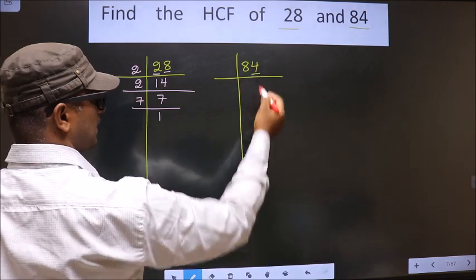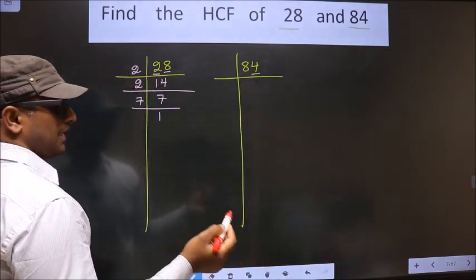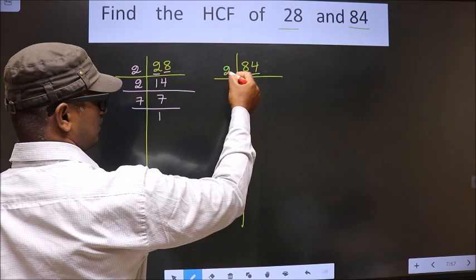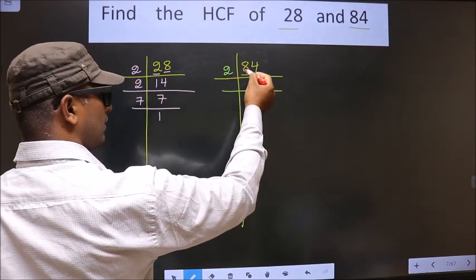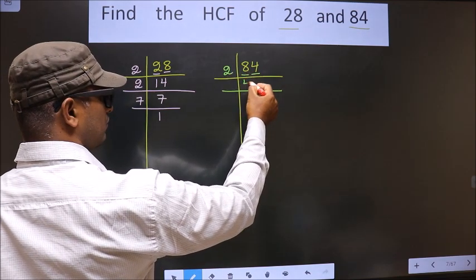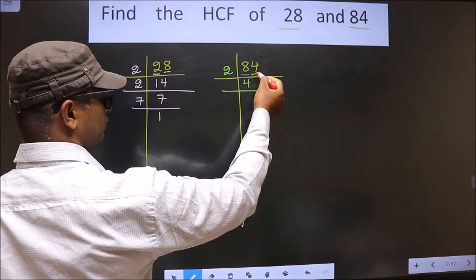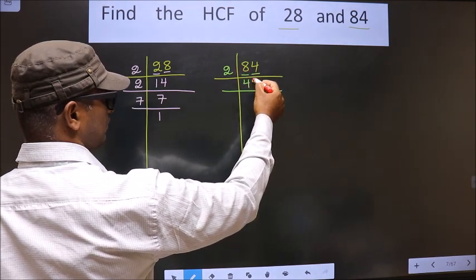Now for this number, the last digit is 4 which is even, so we take 2 here. First number is 8. When do we get 8 in 2 table? 2 times 4 is 8. Next number is 4. When do we get 4 in 2 table? 2 times 2 is 4.